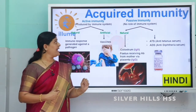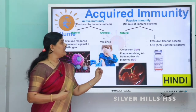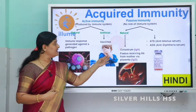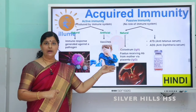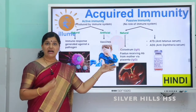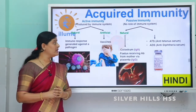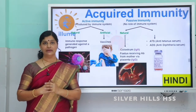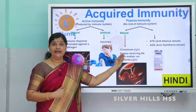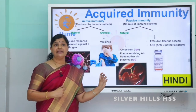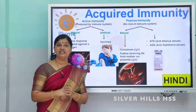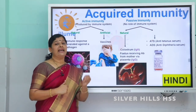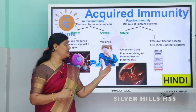Now for passive immunity, which is also of two types — natural and artificial. Natural passive immunity: mother's milk is very important, especially colostrum. The newborn baby has not been exposed to any germ, so antibodies will not be present in the baby. By drinking colostrum, the child gets ready-made antibodies called IgA from the mother. Also, the placenta of the mother produces and secretes certain antibodies for the child, which is called IgG.